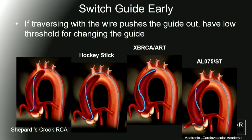The other concept is that you want to switch the guide early. So if you plan ahead, put the guide in, try to wire, and the wire pushes the guide out, then that's a good time to switch the guide, because you're not going to make much progress. This is a very common occurrence with a Shepherd's Crook RCA, where the RCA tracks superiorly — very hard to get good coaxial engagement and support. You want to move to something like a hockey stick, an XB RCA, or even an undersized AL that would provide support from the coronary cusp. You want to do this early, not in the middle of the case.